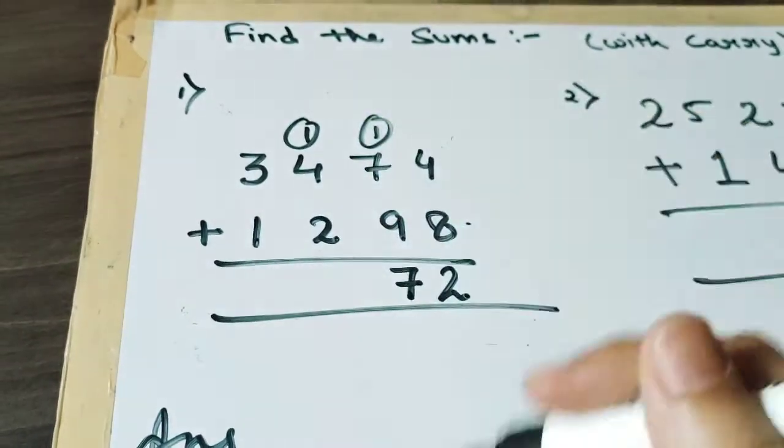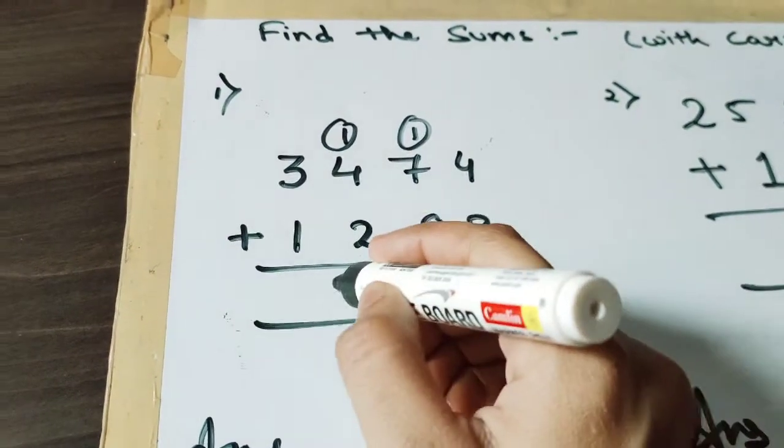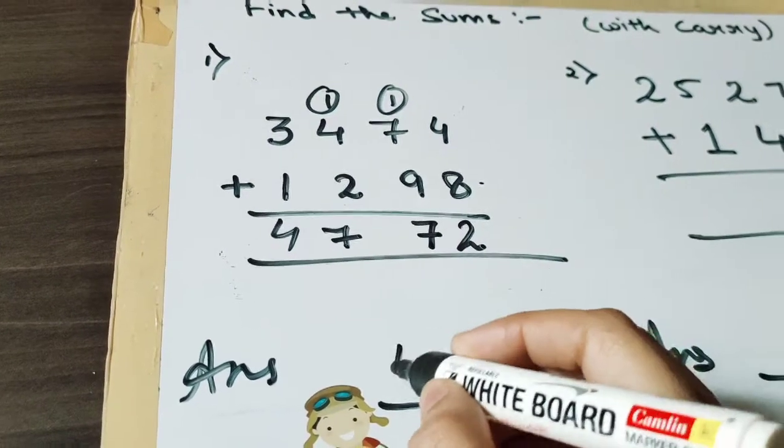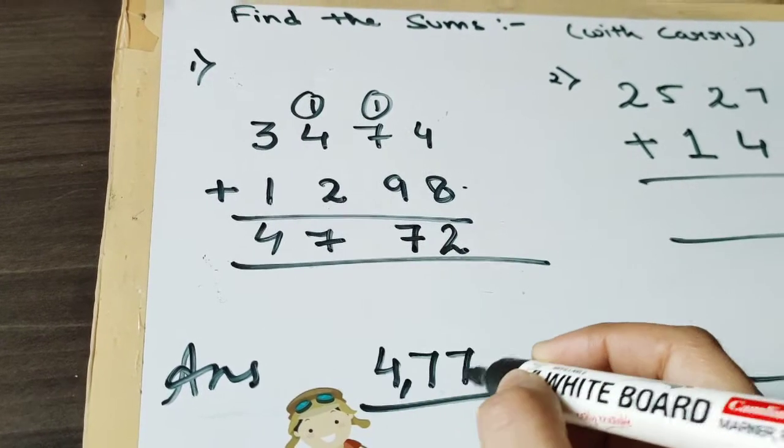4 plus 2 is 6, 6 plus 1 is 7, 3 plus 1 is 4. So now the answer is 4772.